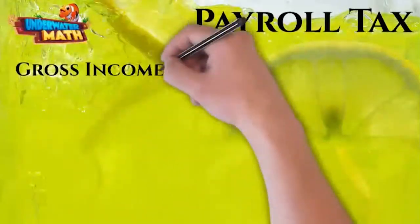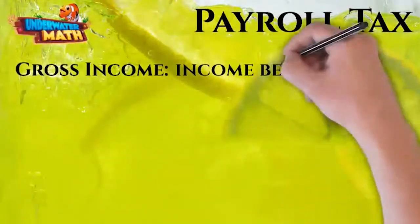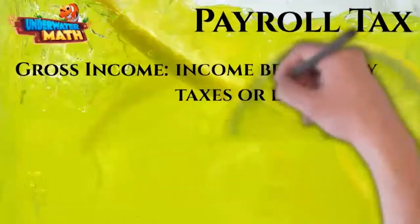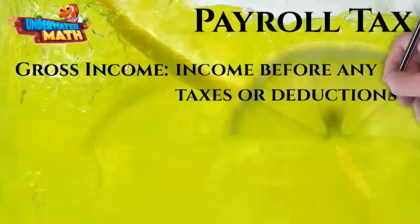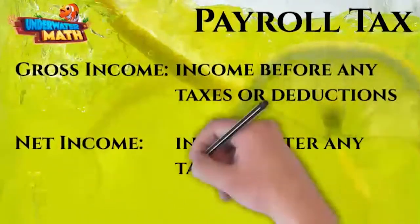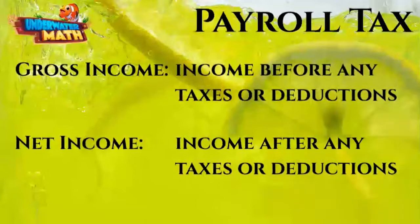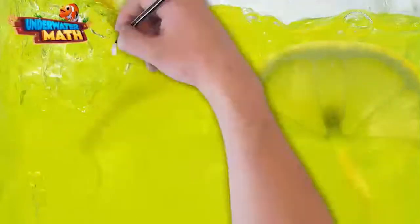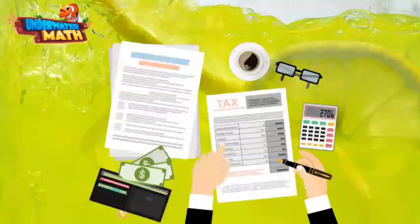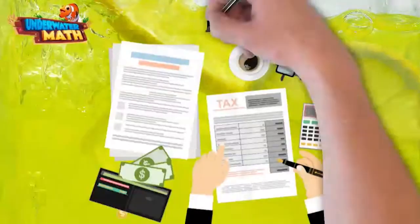Payroll taxes are taxes withheld from paychecks that go to the federal government. Marcus's gross income was $6. Gross income is income before any taxes or deductions. His net income was $5.50. Net income is income after any taxes or deductions.